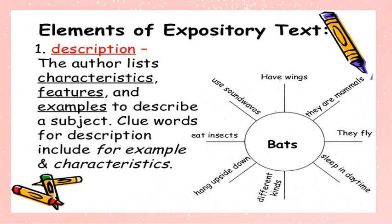Elements of Expository Text. Description: the author lists characters, features, and examples to describe a subject. Clue words for description include 'for example' and 'characteristics.'